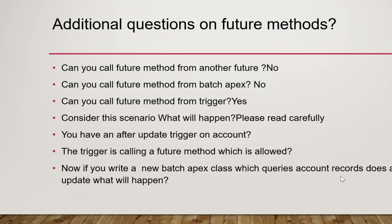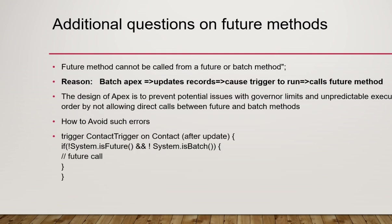When the trigger is running, the future method will be called. So when the batch queries some accounts and updates them, it triggers the update trigger, which calls a future method. The answer is you will get an error like: 'Future method cannot be called from a future or batch method.' The batch has updated the record, the object has a trigger that runs on update, and that trigger is calling a future method.